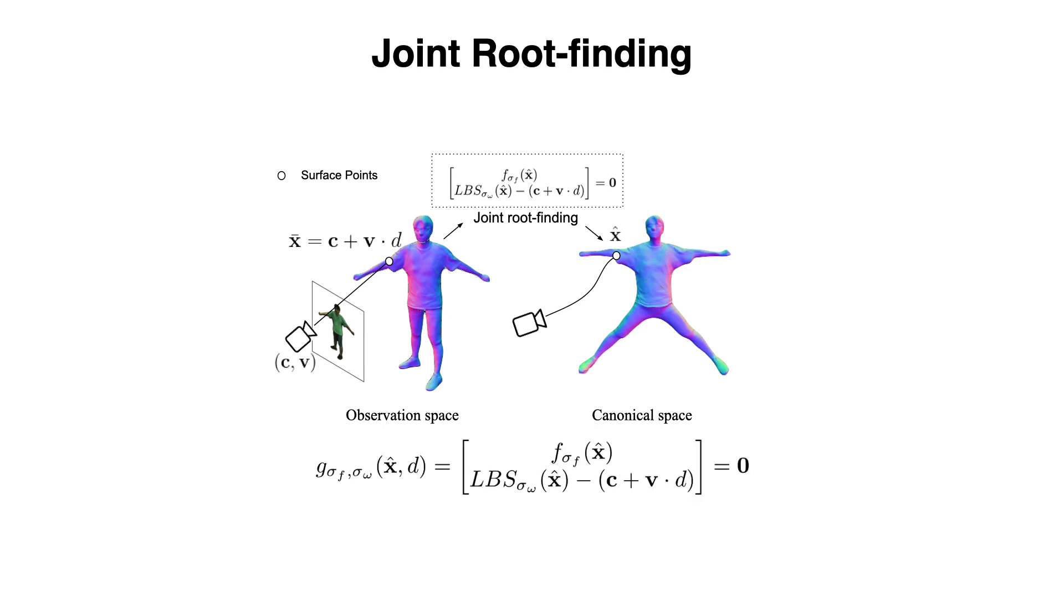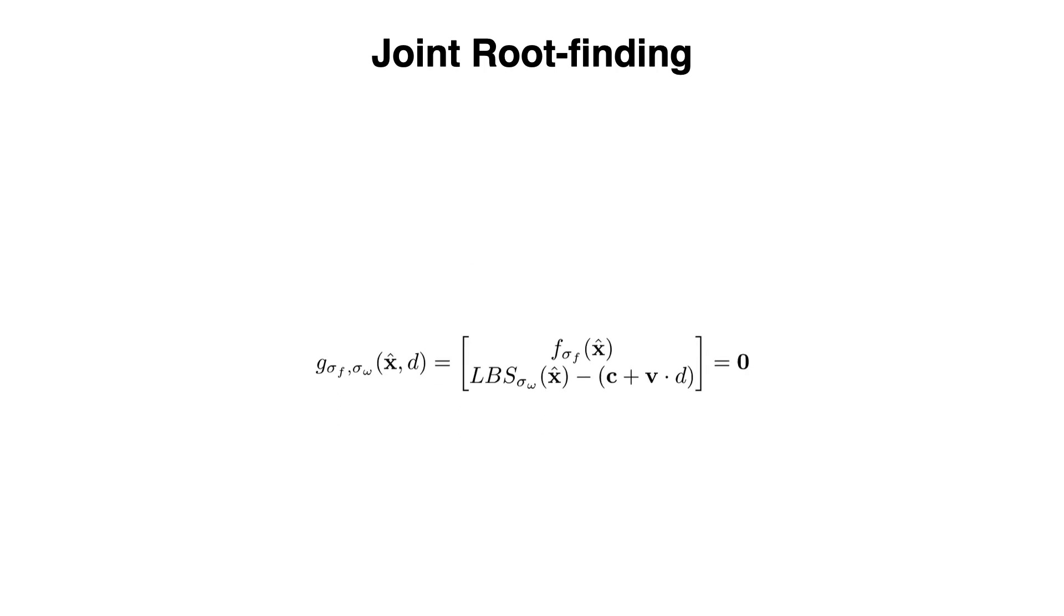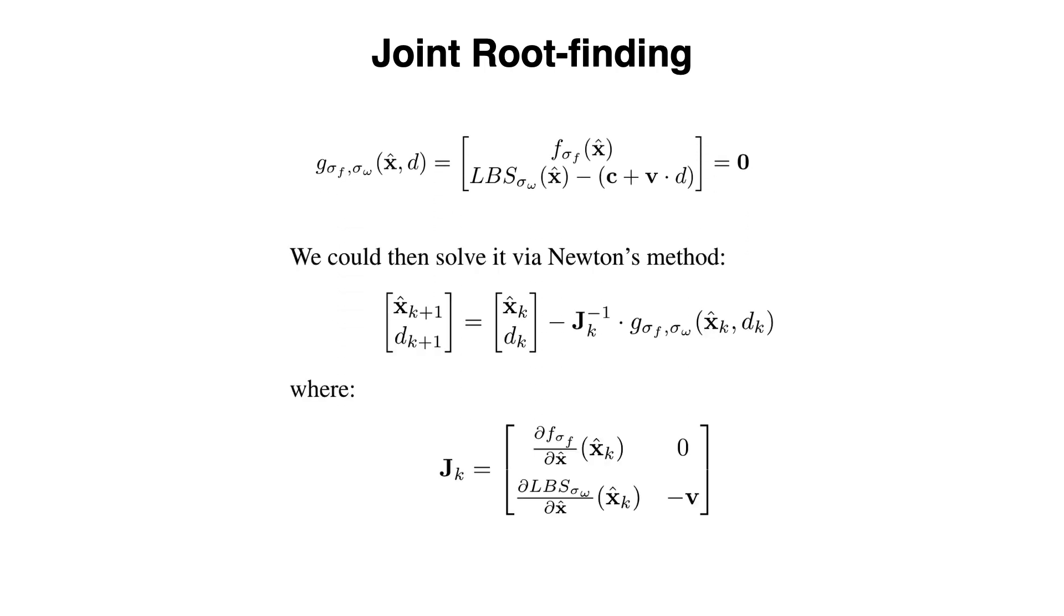We write the SDF function and LBS function as a joint vector-valued function. We can optimize the joint function G with Newton's method, with the Jacobian matrix defined as indicated.